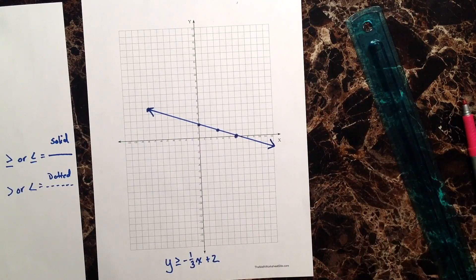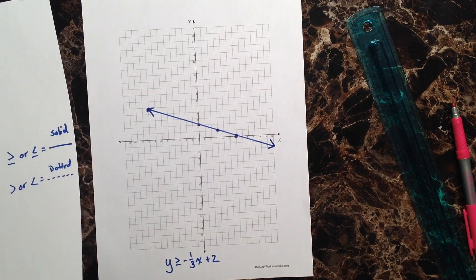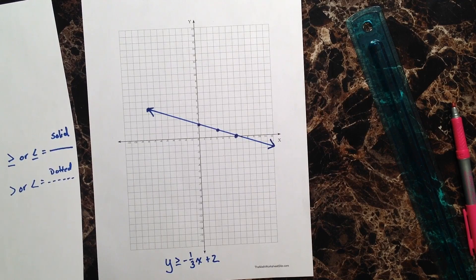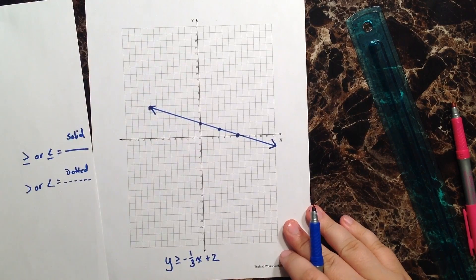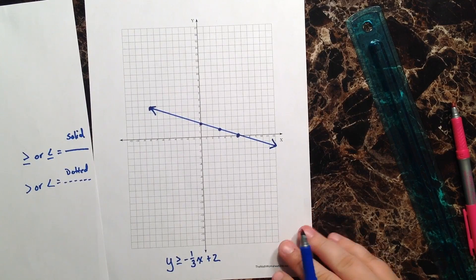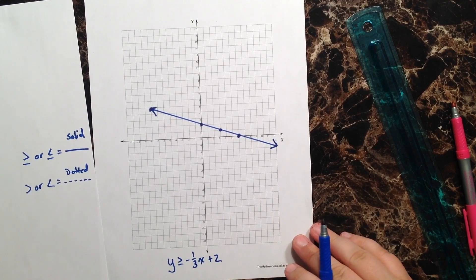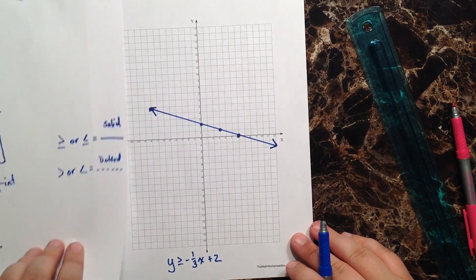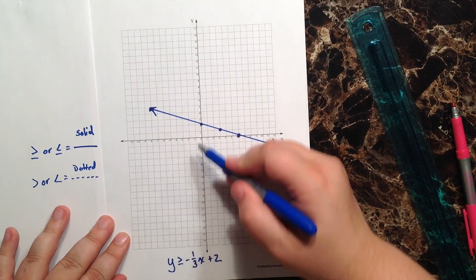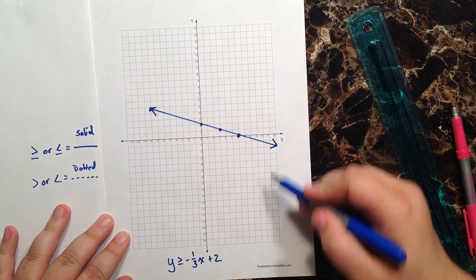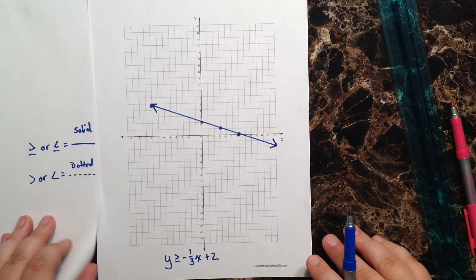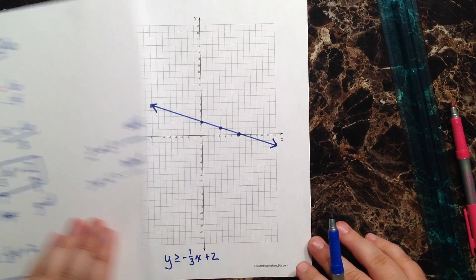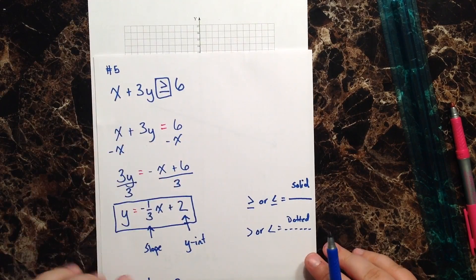There we go — that is our line graphed on the rectangular coordinate system. Because this is an inequality, I know I'll be shading either above or below this line, filling in the region where all the solutions that make the inequality true are located.